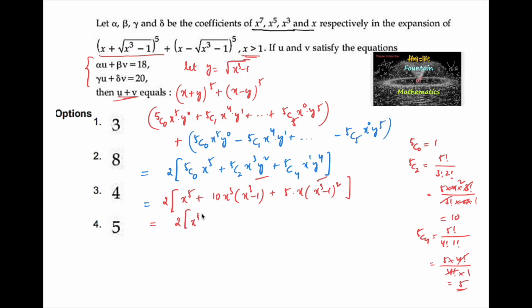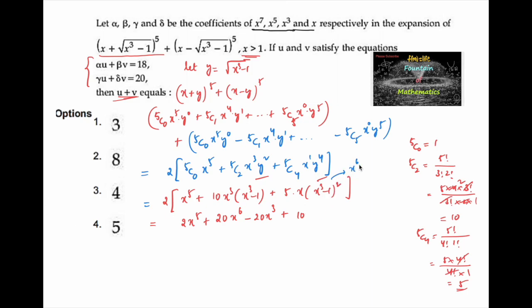Expanding further: 2x⁵ + 20x³(x³ - 1) + 10x(x³ - 1)². Expanding (x³ - 1)² = x⁶ + 1 - 2x³, this gives 2x⁵ + 20x⁶ - 20x³ + 10x⁷ + 10x - 20x⁴.